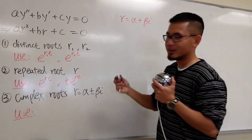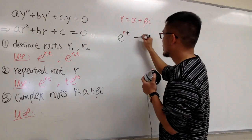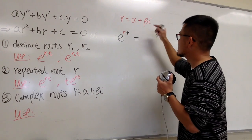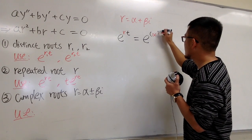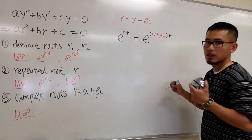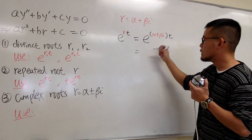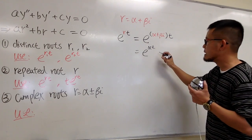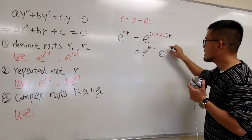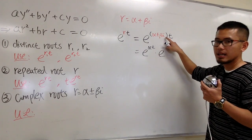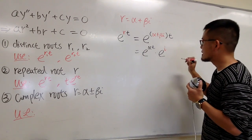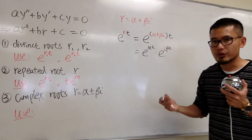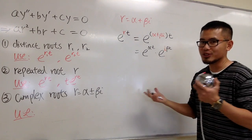I'm going to plug this complex r into e^(r·t). We still have to plug in whatever r we have into e^(r·t). In this case, r is α + βi, so I write it as e^((α + βi)·t). Distributing the t into the parentheses, we get e^(α·t) multiplied by e^(i·β·t). Now, α and β are just real numbers, so e^(α·t) is fine — no problem there. The trouble comes from e^(i·β·t).